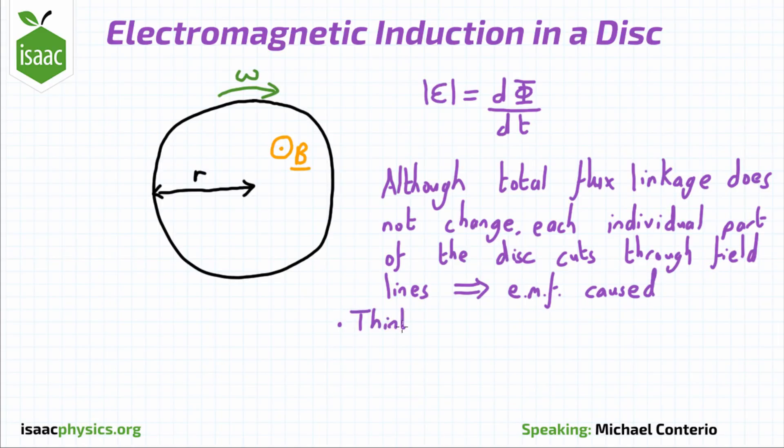To calculate the EMF, think about the rate of flux swept out by a wire going from the centre to the edge of the disk over an entire rotation.